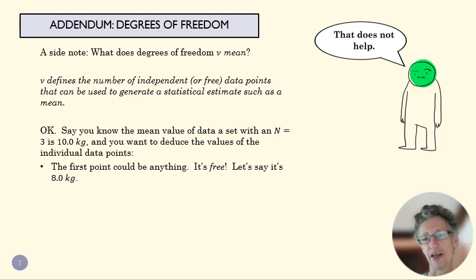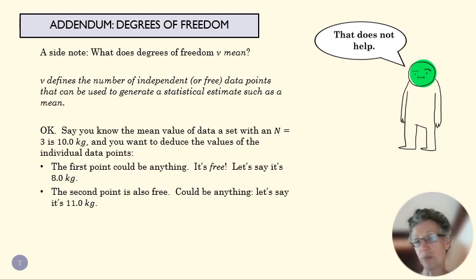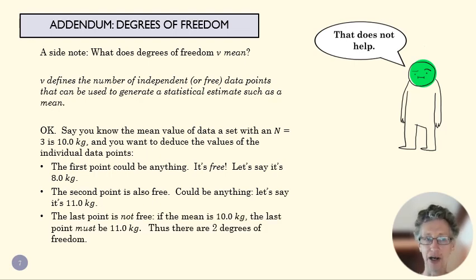Say I know the mean value of three data points is 10 kilograms. The first point could be anything - let's say it's 8 kg. The second point is also free - let's say it's 11 kg. Those are two degrees of freedom. But once I know those two points, the third point has to be 11 kg in order to have an average of 10. That last point is not free. That's what two degrees of freedom means.